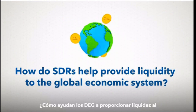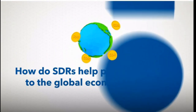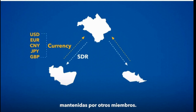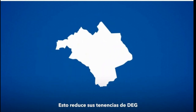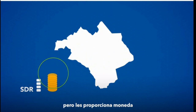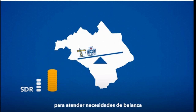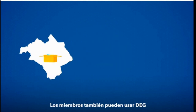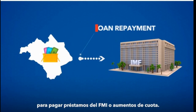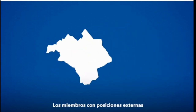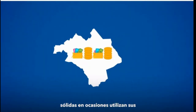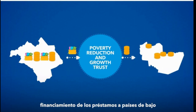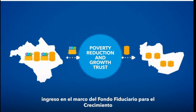How do SDRs help provide liquidity to the global economic system? Members can exchange SDRs for freely usable currencies held by other members. This brings down their SDR holdings but provides them with the currency to either help meet balance of payment needs or add to their own reserves. Members can also use their SDRs to pay for IMF loans or quota increases. Members with strong external positions sometimes use their SDR holdings to contribute to the financing of low-income countries by lending to the poverty reduction and growth trust.